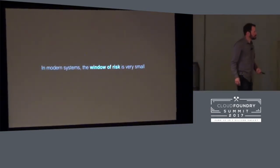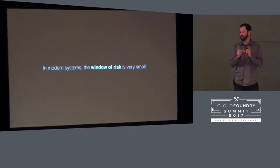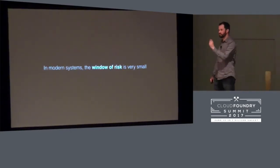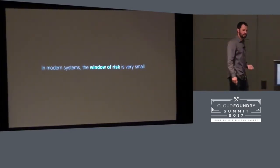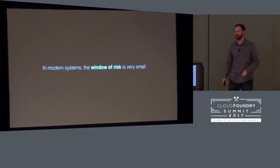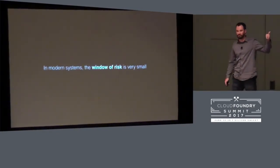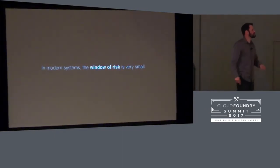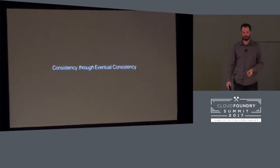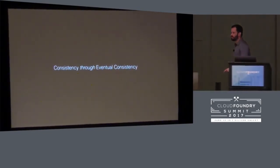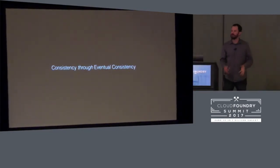In modern systems with eventual consistency, the window of risk is actually really small. It used to be there were large network delays and it was very hard to send data because the pipe was small — but that's not true anymore. If we couple eventual consistency with other good best practices, like blue-green deploys and non-breaking schema changes, then that window of risk becomes really small and we can actually gain consistency by using eventual consistency.